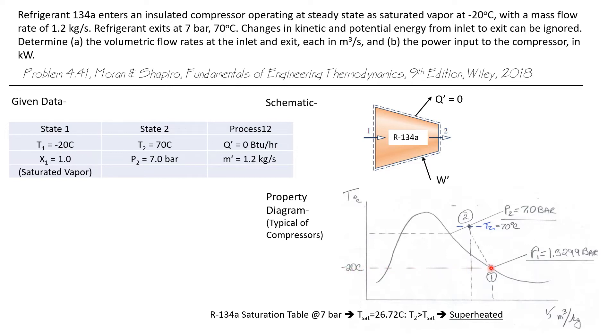So it's going to be right here on the saturation line. And in the saturation tables at minus 20 degrees C, we will find that the saturation pressure is about 1.33 bar.